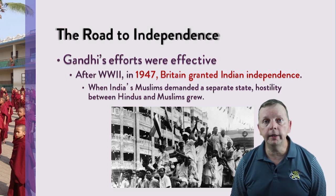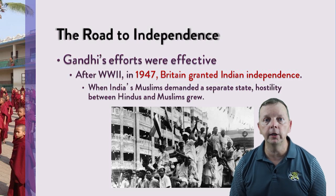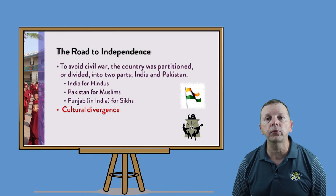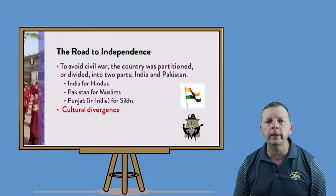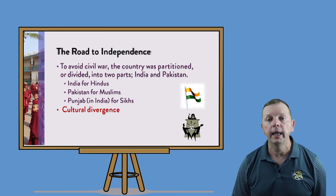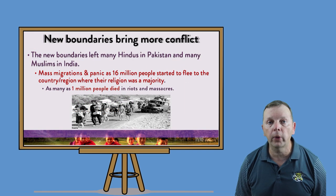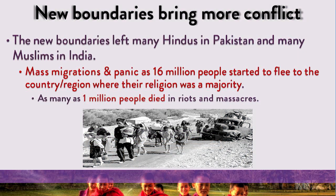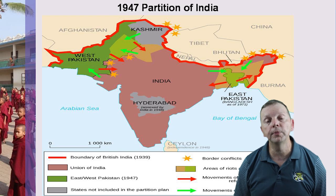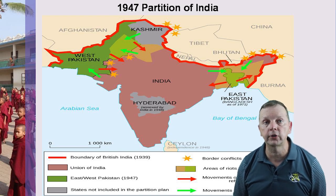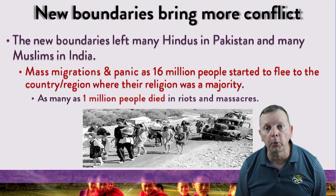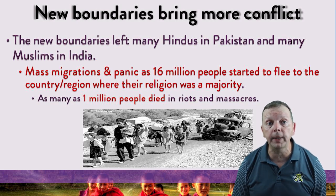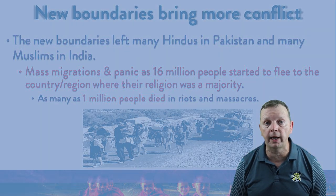However, Muslims in India also wanted their own separate independence from the Hindu-dominated India. And when they threatened civil war, Gandhi, who always wanted peace, agreed to split India into two parts — India and Pakistan. In this great partition, Bangladesh was part of Pakistan, known as East Pakistan. But because the partition was based upon religion, this meant the Hindus that lived in Pakistan had to move to India, and the Muslims that lived in India had to move to Pakistan. All 16 million people were forced to move, and of these, nearly 1 million people died in the resulting riots and massacres.